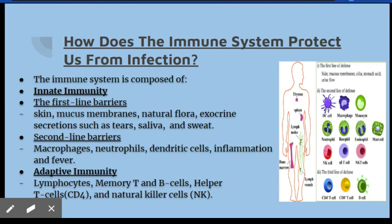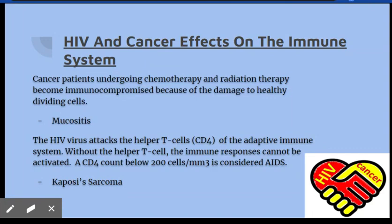HIV and cancers have a great effect on the immune system. Cancer patients undergoing treatments such as chemotherapy and radiation therapy can become immunocompromised because of the damage to healthy dividing cells.